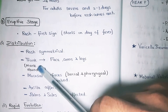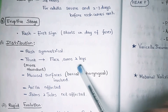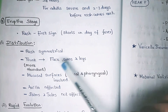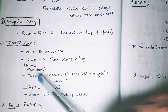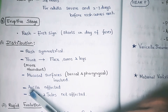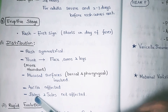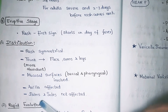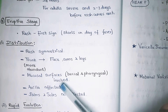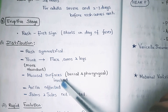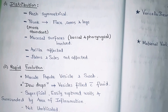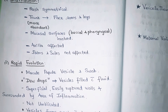The rash starts from the trunk, then spreads to the face, arms, and legs, and is more abundant on the trunk. The mucosal surface and axilla are affected in chickenpox, whereas in smallpox the mucosal surface and axilla are not affected but the palms and soles are. In chickenpox, the palms and soles are not affected.